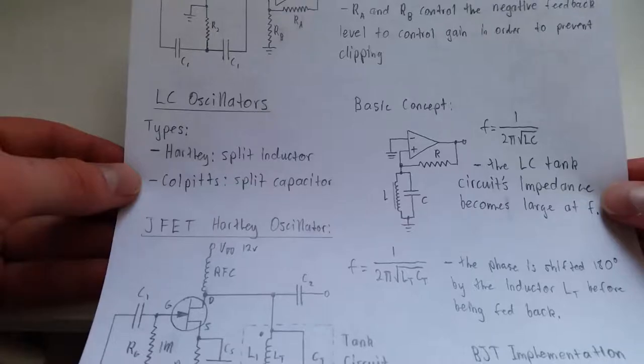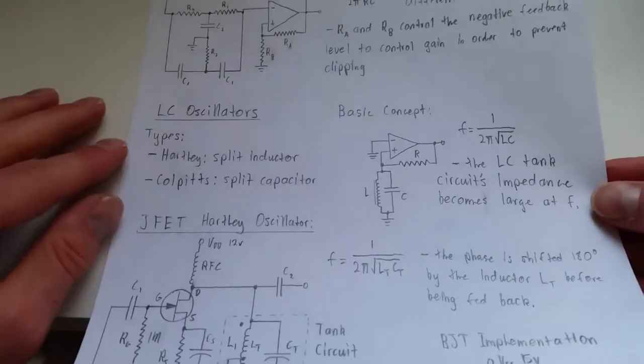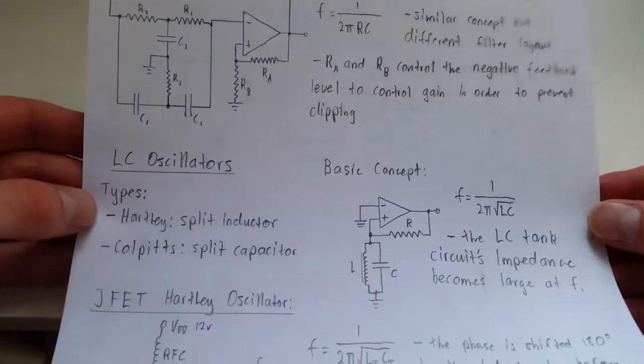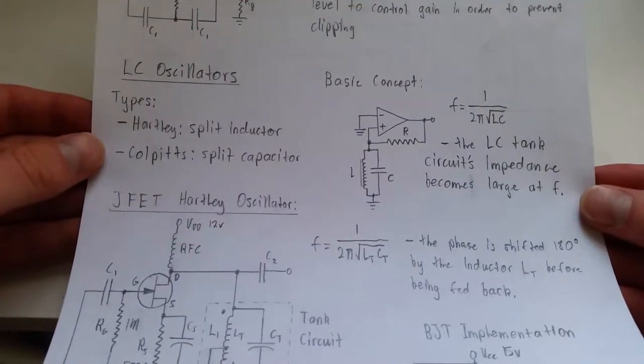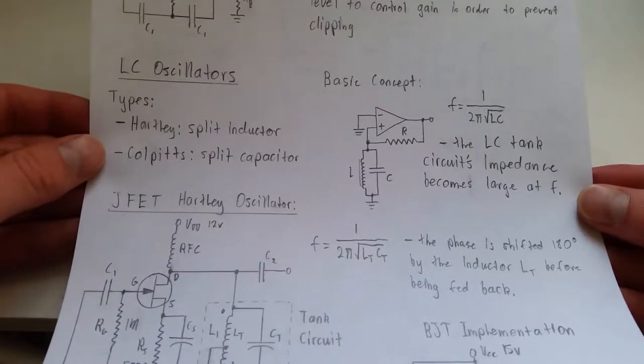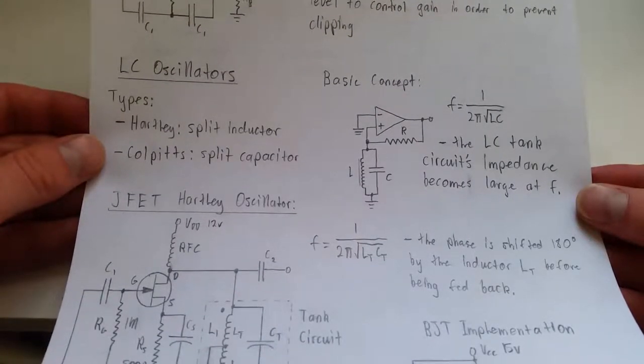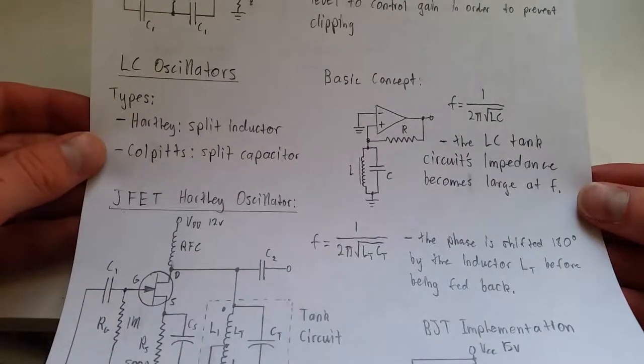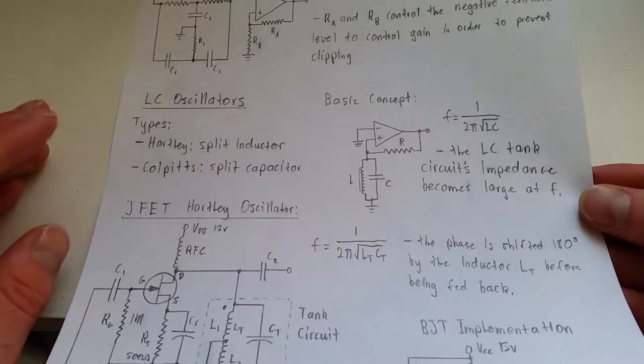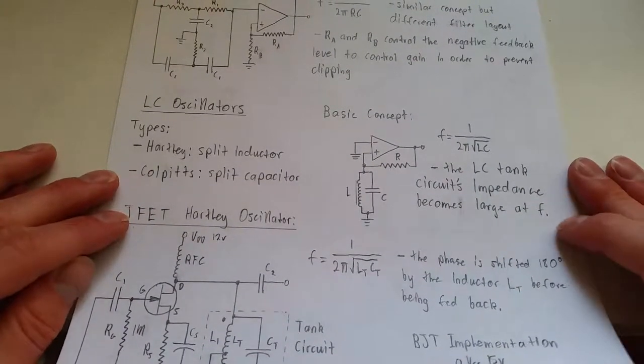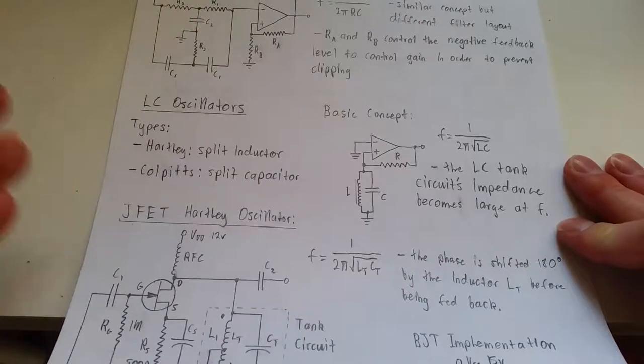LC oscillators are better used at high frequencies. The ones I've discussed in the past are pretty much only work up to like the kilohertz range. They usually don't work very nicely up to RF. They might. It kind of depends on your components and the stray capacitances and all that. But LC oscillators tend to work better at RF. These are the things you see in like radios.